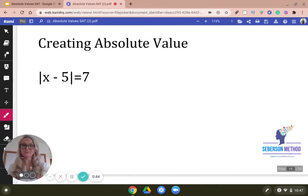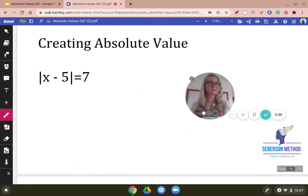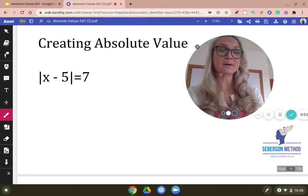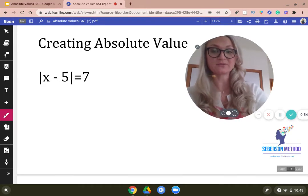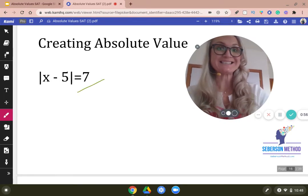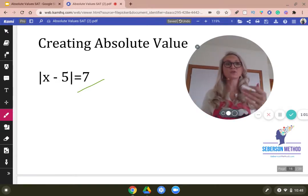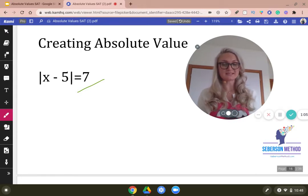I know I have, and the answer that I found is that the reason it's always positive is because the number outside of the absolute value denotes distance, and distance cannot be negative. Even if you're going back, your distance is always positive.